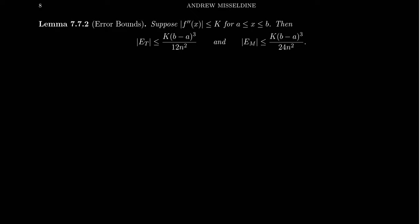But how can one determine what the error is if you don't actually know what the exact result is? Because if you know what the exact result is, why are you approximating in the first place?